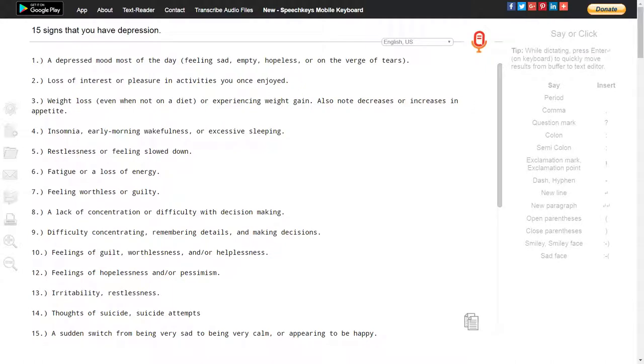Number four: insomnia, early morning wakefulness, or excessive sleeping. Number five: restlessness or feeling slowed down.